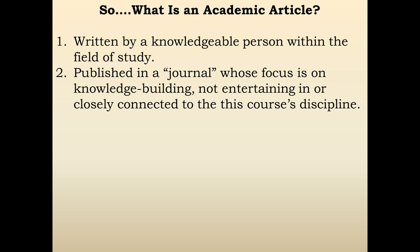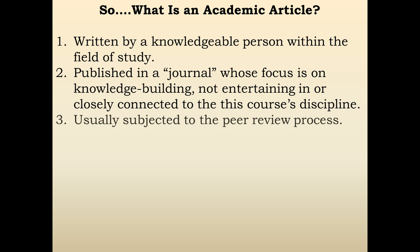Be aware of the distinction between academic journals and other publications — you don't want to go to National Geographic to find your article. Typically, academic articles are subject to the peer review process. When a scholar writes an article, he or she sends it to an editor, who shares it with several people also in that field to review it. Those peers provide critical feedback and say whether they think it is acceptable to be published in that particular publication.